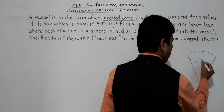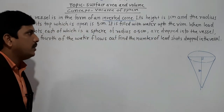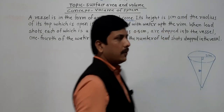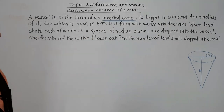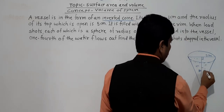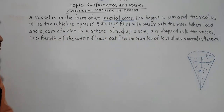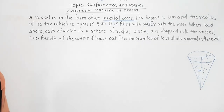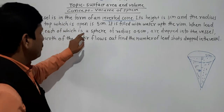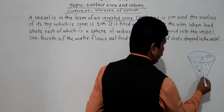Height is equal to the vertical height, 8 cm. And the radius of its top, which is open, is 5 cm. Radius is given 5 cm. It is filled with water up to the rim. When lead shots, each of which is a sphere of radius 0.5 cm, are dropped into the vessel.